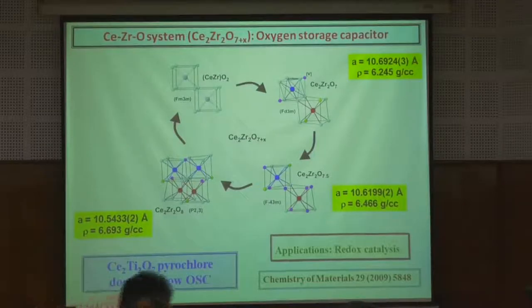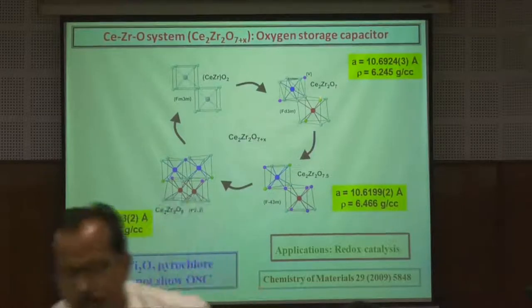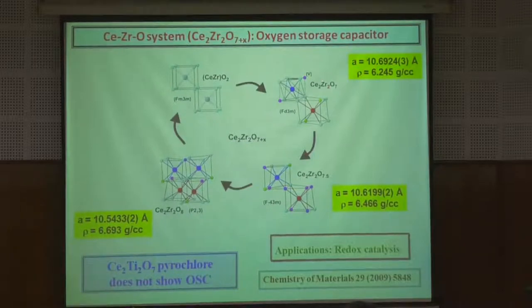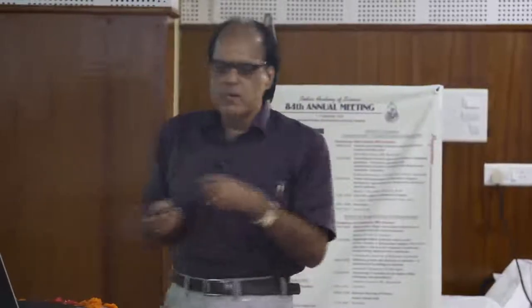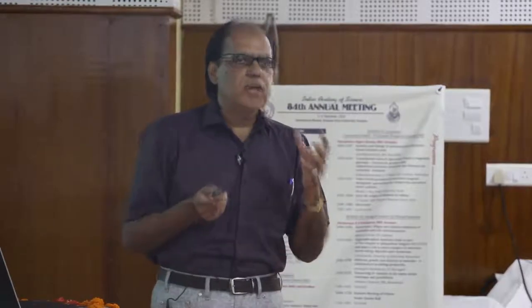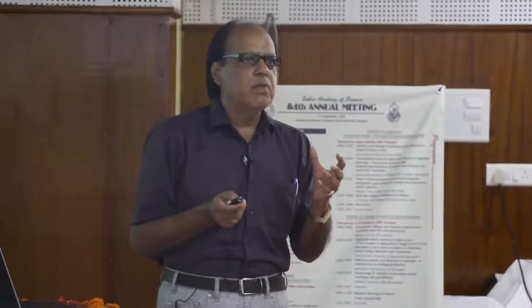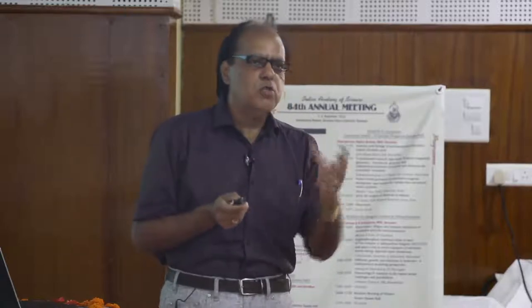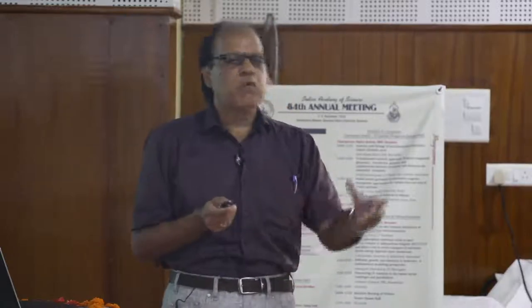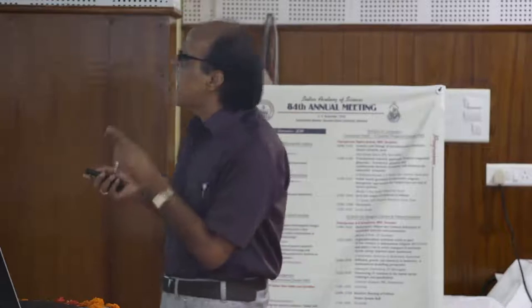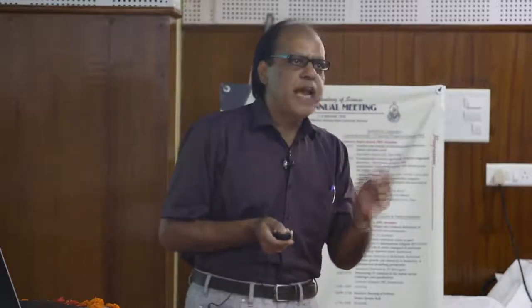One more example: we made a new compound with composition Ce2Zr2O7. You oxidize it to O7.5 and O8. In the clockwise direction it picks up oxygen, in the anti-clockwise direction it loses oxygen. I have coined the term 'oxygen sponge' for this system — just like a sponge: you squeeze and water goes out, you release and water goes in. By simple thermal perturbation, this compound can dispense oxygen at will. The titanium analog does not show this oxygen storage behavior because titanium is too small to adopt the fluorite structure, whereas zirconium can adopt 6-fold and higher coordination numbers.